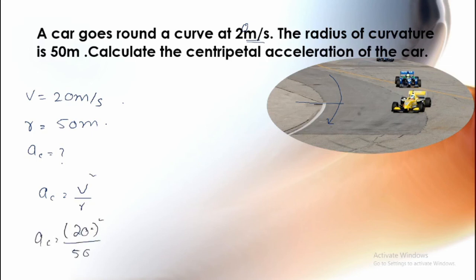Centripetal acceleration is equal to 20 squared divided by R. When we have taken square, our value is 400 divided by 50. That will give us 8 meters per second squared. What is the acceleration unit? Meter per second squared.